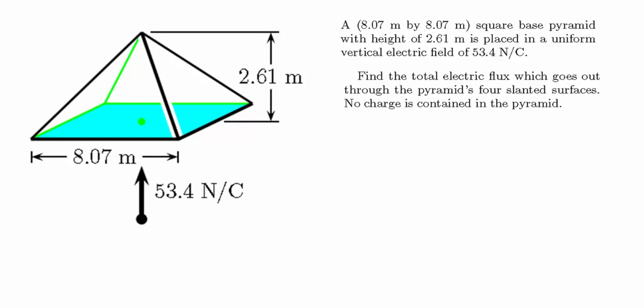The second problem is a little bit different. It's still looking at the idea of electric flux, but it has an extra piece. We have a square-based pyramid where the sides of the base are 8.07 meters each. There's an electric field pointing straight up at 53.4 newtons per coulomb, and we're trying to find the electric flux going out through the pyramid's four slanted surfaces. The key idea is that no charge is contained in the pyramid.